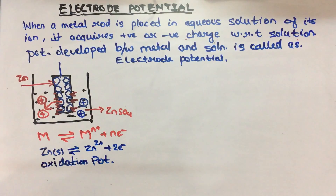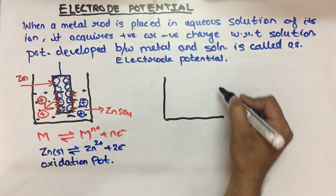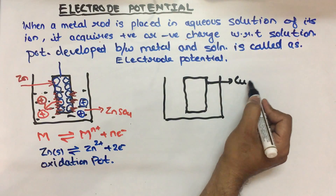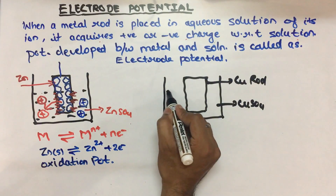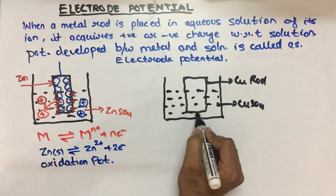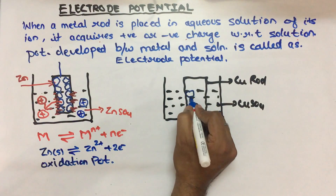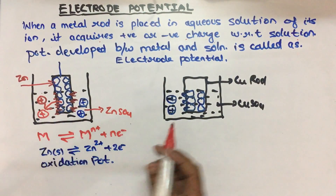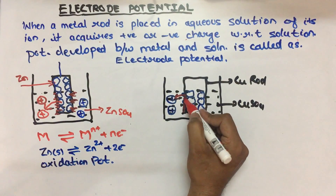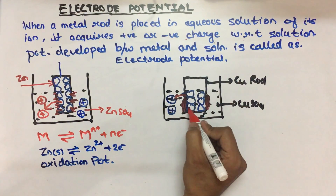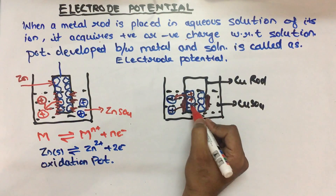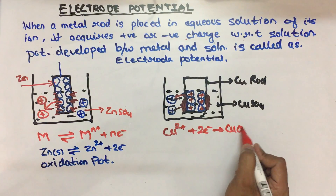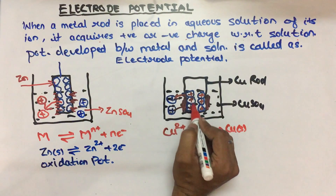Similarly, we can take another example. When a metal rod is dipped in a solution of its own ions, the metal rod can attract cations. For example, a copper rod dipped in copper sulfate solution attracts cations. The solution pushes cations onto the metal rod. The rod has electrons at its surface, so cations come from the solution, attract electrons, become neutral solid copper, and start depositing at the surface. So copper 2+ ions are attracted by electrons and deposited on the metal rod.